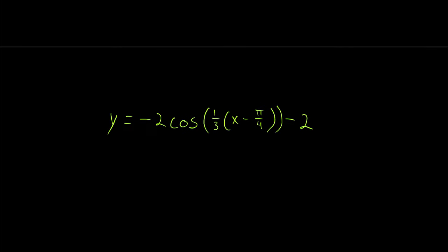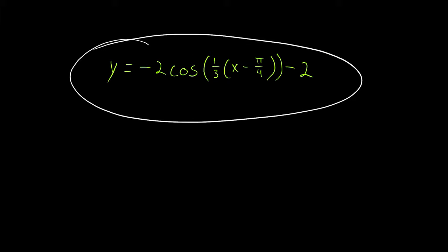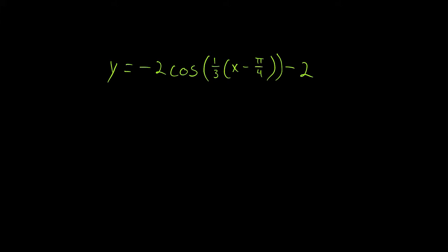Let me know how this nasty example goes in the comments. I'll leave some information about it in the description so you can check your midline, period, and other values. I hope this video helped you understand how to graph transformations of sine and cosine. Let me know in the comments if you have any questions, need anything clarified, or have any other video requests. Thank you very much for watching, and be sure to subscribe for the swankiest math lessons on the internet.